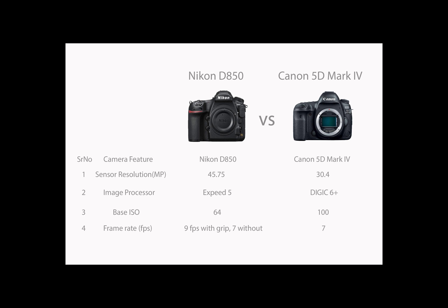Nikon D850 has a frame rate of 9fps with grip and 7fps without grip, whereas Canon 5D Mark IV has a frame rate of 7fps. With such high continuous shooting speed, the D850 provides the flexibility to shoot an entirely different genre of photography — high-end sports, fast action wildlife, motorsports, and fast-paced fashion shoots.